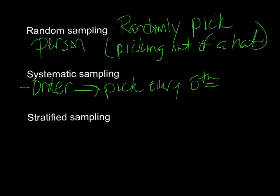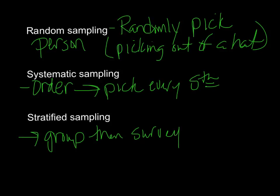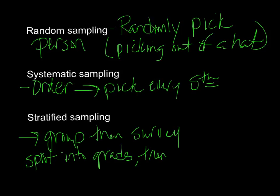Systematic sampling is not biased — it's every fifth, every tenth, or every other person. The last type is stratified sampling: you group them and then pick. A good example is high school — you split the school up into grades, then randomly sample people in those grades, picking say 20 people from each grade. So: stratified means group then randomly pick; systematic means every fifth or every seventh; random is like picking out of a hat.